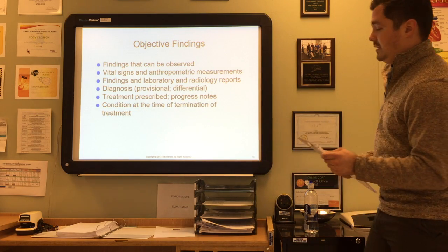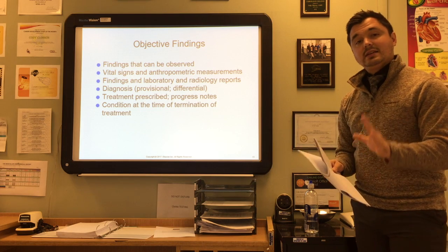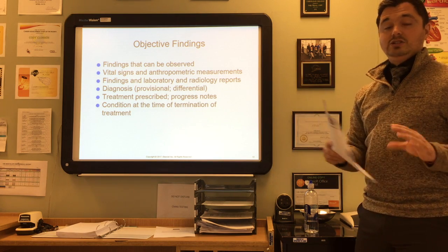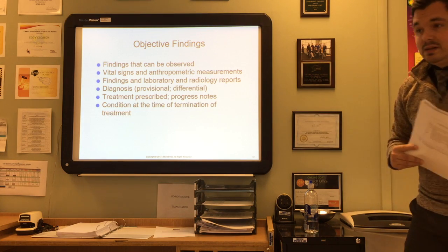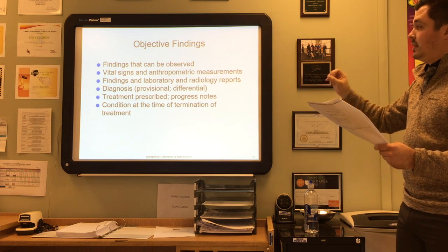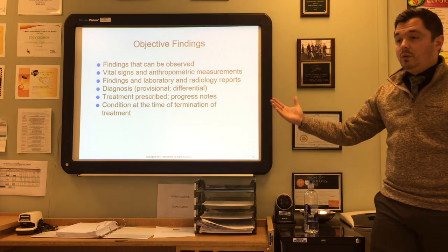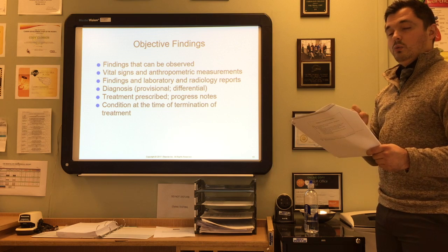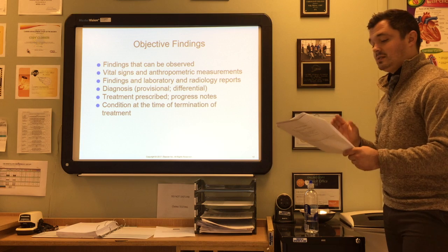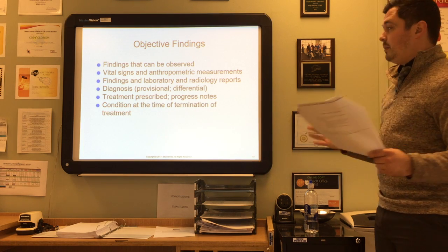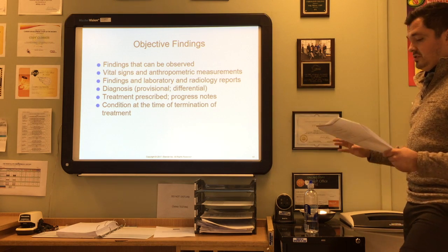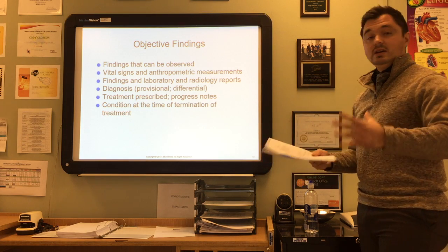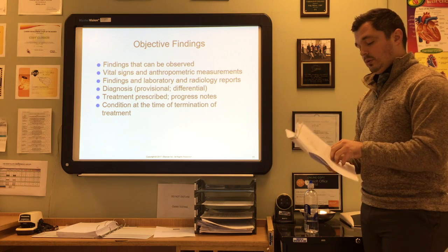To emphasize: subjective findings are what the patient presents to you — why are they there, what are they telling you. Objective findings and information are things you can see and measure, such as vital signs and anthropometric measurements, findings, laboratory and radiology reports. Diagnosis includes both provisional and differential diagnoses. A provisional diagnosis is one where there could still be some doubt, while a differential diagnosis is the process of weighing the probability of one disease against another. Treatments prescribed, progress notes, and condition at the time of termination of treatment are also objective findings.